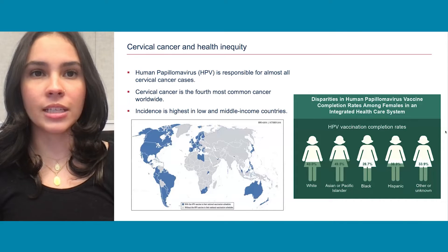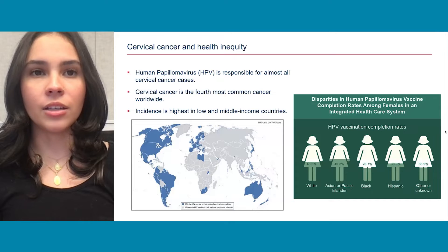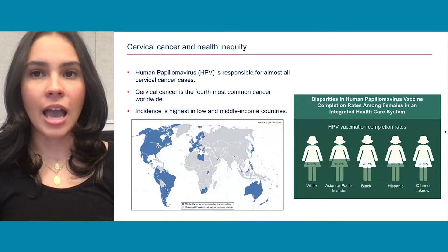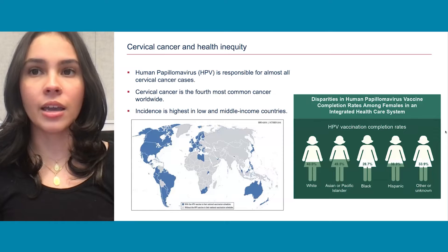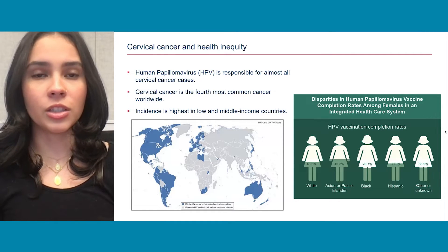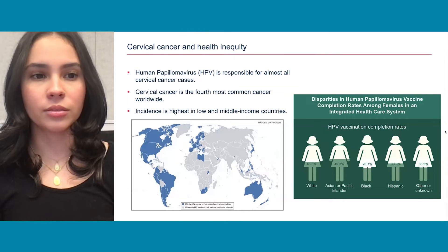HPV has been recognized as a preventable disease since there is an HPV vaccine. As seen on the vaccination map on the left, not all countries have been vaccinated at the same rate. Continents like Africa and Asia, where HPV is high, have low vaccine rates. The World Health Organization initiated a plan to advance in the elimination of cervical cancer by 2030.